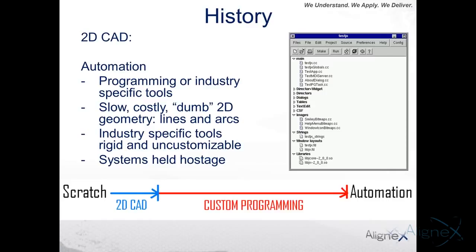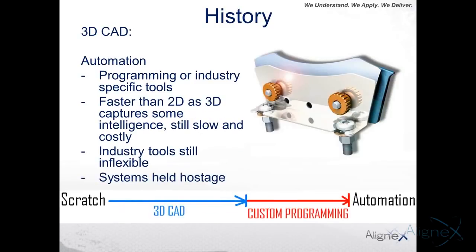Today many customers use 2D CAD. The automation available with 2D typically relies on industry-specific tools like AutoLISP for AutoCAD users, or Visual Basic. But we're still automating dumb entities — arcs and lines — so we don't get any benefits of 3D: checking fit, form, function, or analysis. Also, your tools are often held hostage. Customers who've done heavy customization often can't upgrade their CAD or ERP tool because they're all tied together — upgrading one breaks the other.